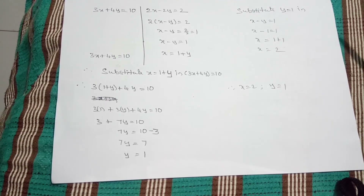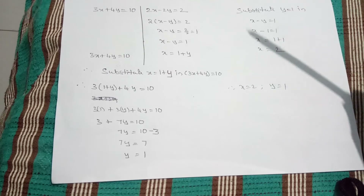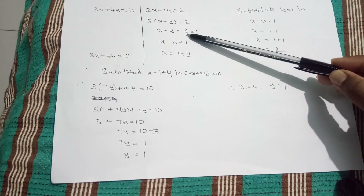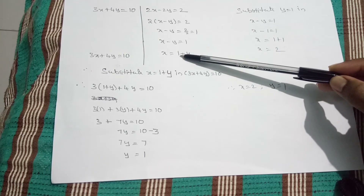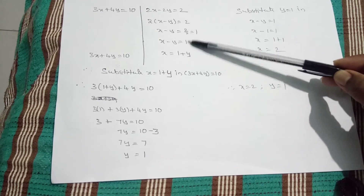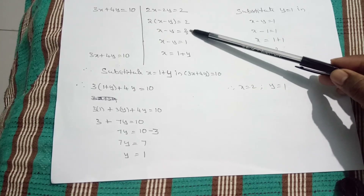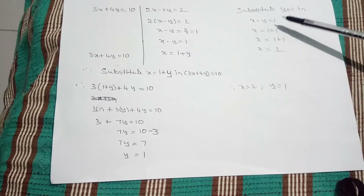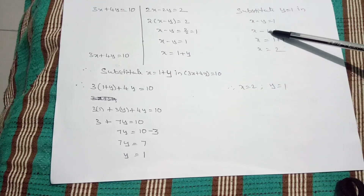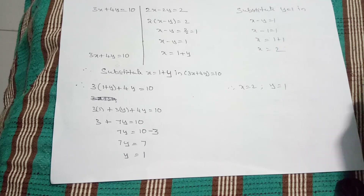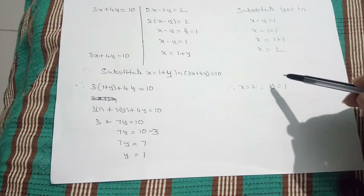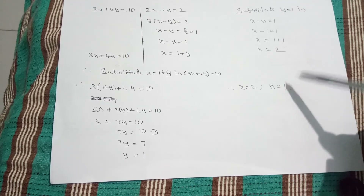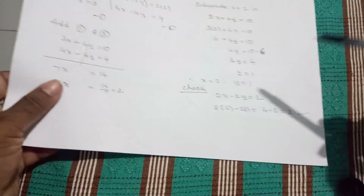Now take any of the equations and substitute y equal to 1. These two forms are simplified equations — they are equivalent, just reduced by dividing by 2. I select x minus y equal to 1. Substituting y equal to 1, you get x equal to 2. So we got the same x value 2 and y value 1 in both methods.